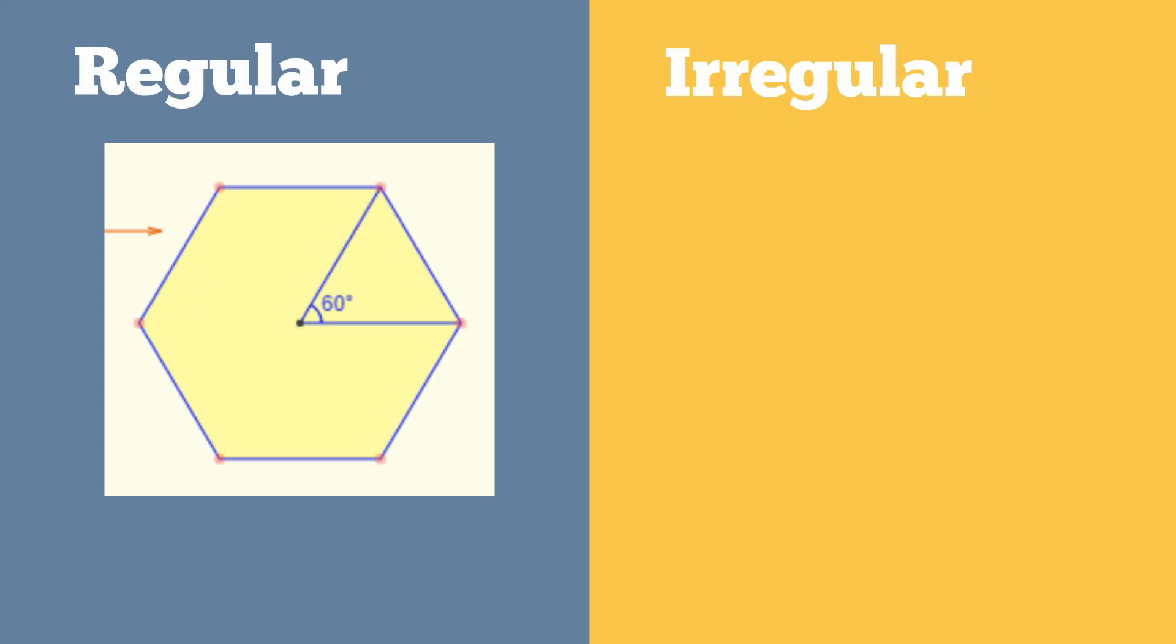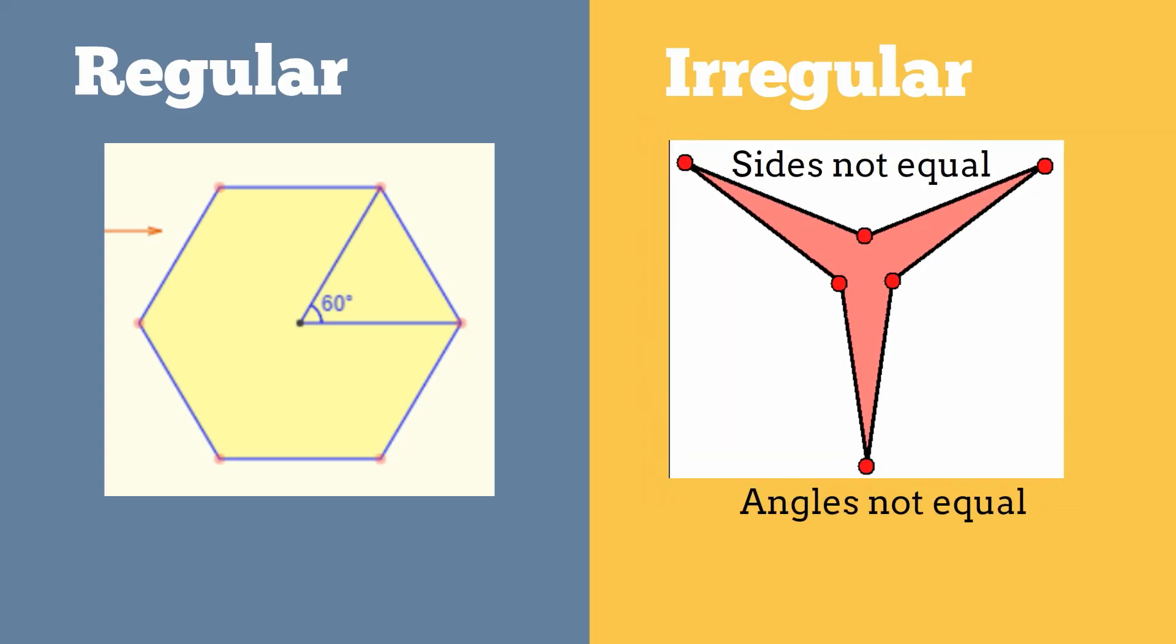Hexagons can also be irregular, which means the shape does not have equal sides or angles.